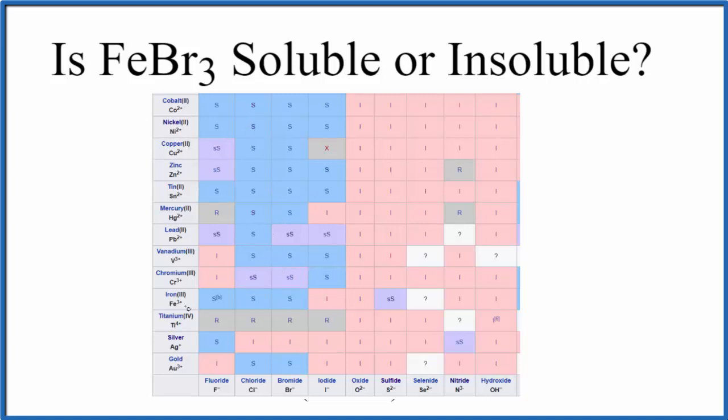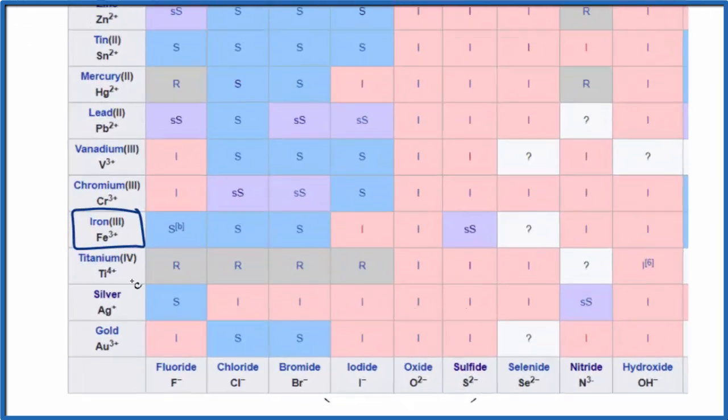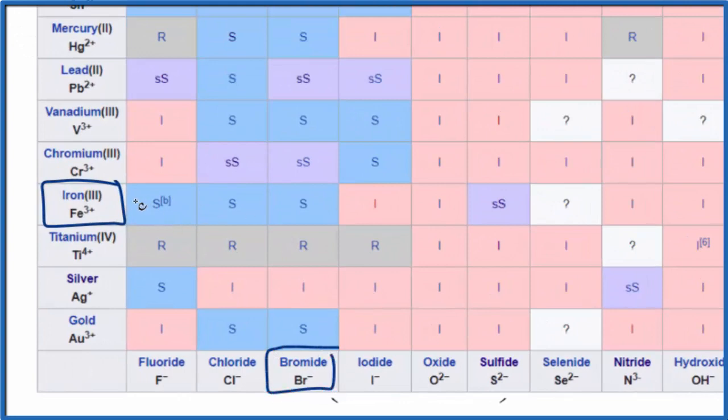But we're going to find iron 3, that's right here which is Fe3+, and we're looking for bromide. We have bromide right here. So we go over and we go up and that S, that stands for soluble.